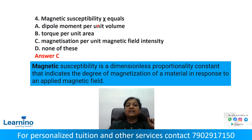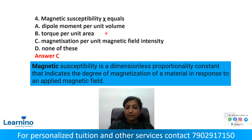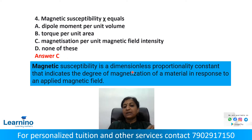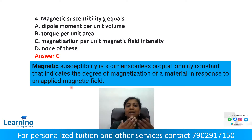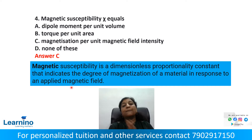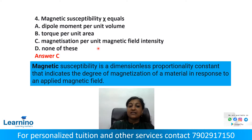Question number 4: Magnetic susceptibility psi equals? Options: dipole moment per unit volume, torque per unit area, magnetization per unit magnetic field intensity, or none of these. Magnetic susceptibility is a dimensionless proportionality constant that indicates the degree of magnetization of a material in response to an applied magnetic field. The correct answer is magnetization per unit magnetic field intensity.